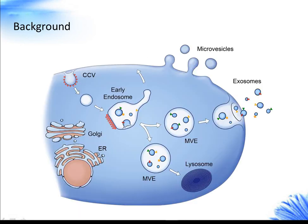Exosomes represent a specific subtype of secreted membrane vesicles, showing a characteristic cup-shaped or well-delimited round morphology when observed by electron microscopy. They are small membrane vesicles with a diameter of 30–100 nanometers.